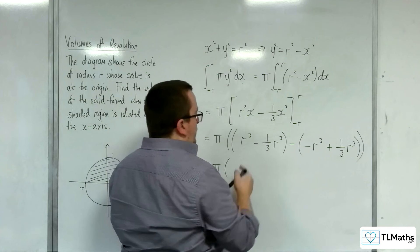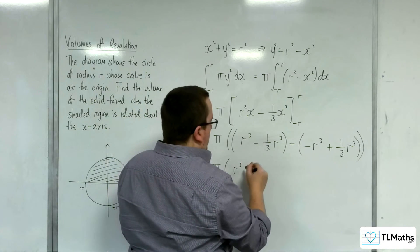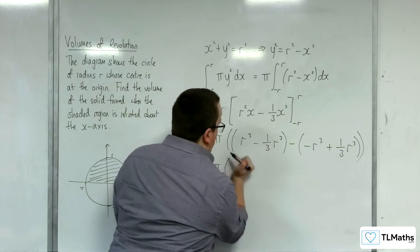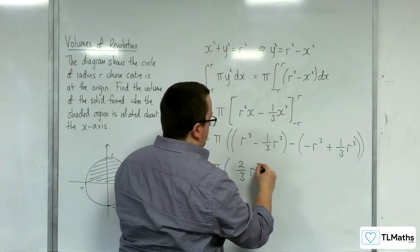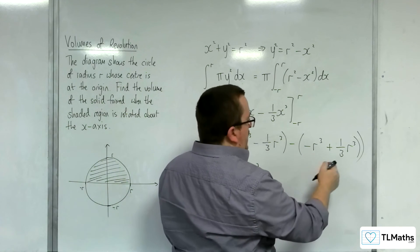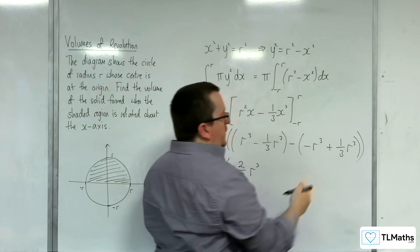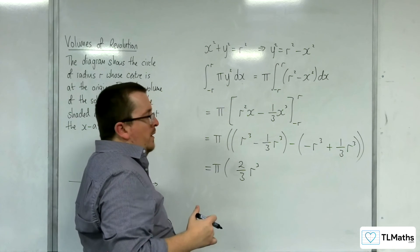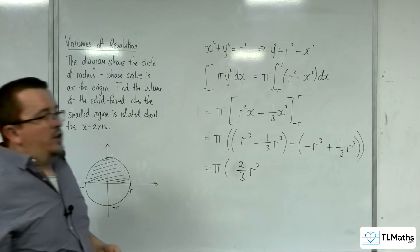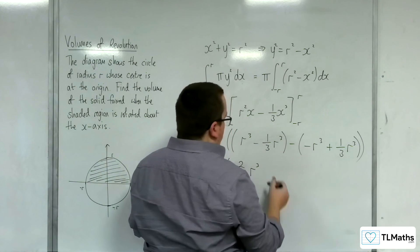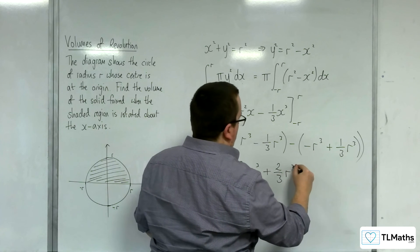So we have r cubed minus one third r cubed, which simplifies to two thirds r cubed. And from the lower limit we have minus r cubed plus one third r cubed, which is minus two thirds r cubed. Subtracting that gives us plus two thirds r cubed.